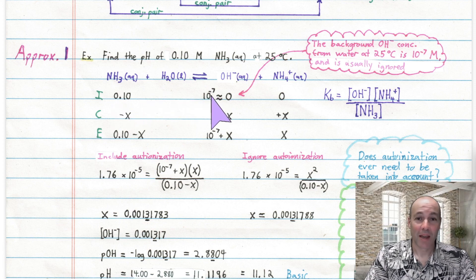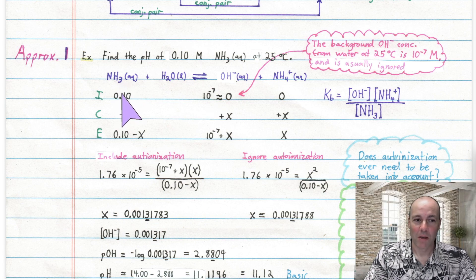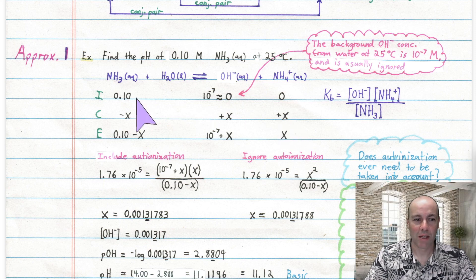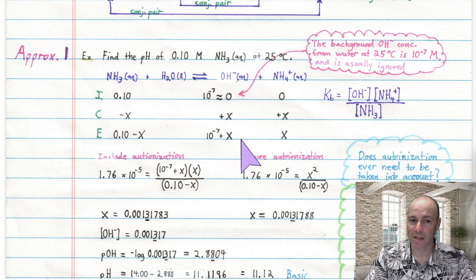To get to equilibrium starting with 0.1 molarity of ammonia, it will lose X amount, and the products will gain X amount. At equilibrium: ammonia is 0.1 − X, hydroxide is 10⁻⁷ + X, and ammonium is X.